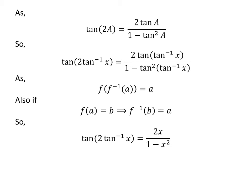So, tangent of 2 times arctangent of x is equal to 2x upon 1 minus x squared. So, 2 times arctangent of x is equal to arctangent of 2x upon 1 minus x squared.